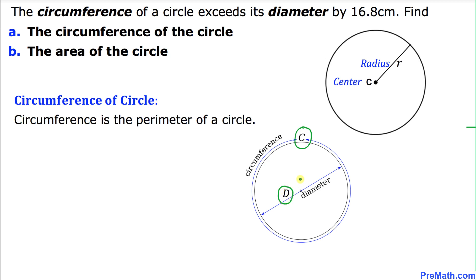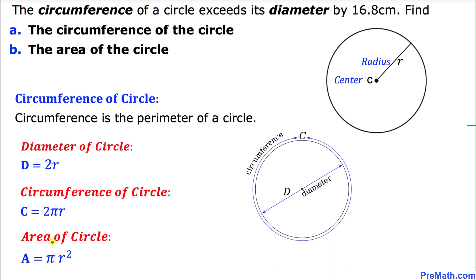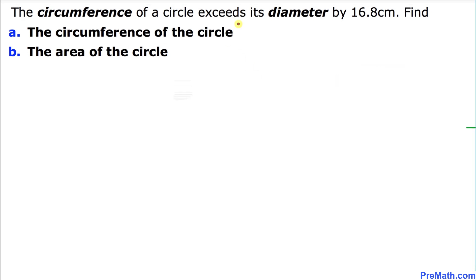Always remember that the diameter is twice the radius — that means diameter equals 2 times r, so d = 2r. The formula for the circumference of a circle is c = 2πr. And the formula for the area of a circle is a = πr².